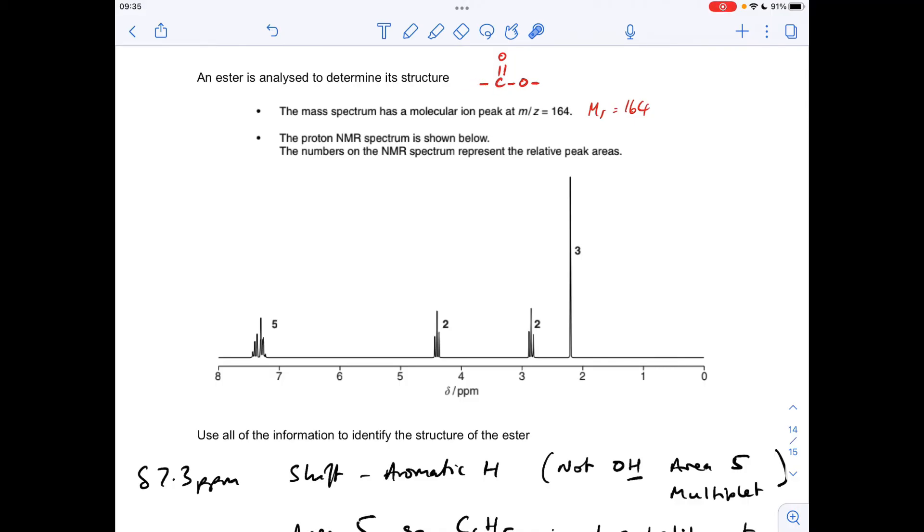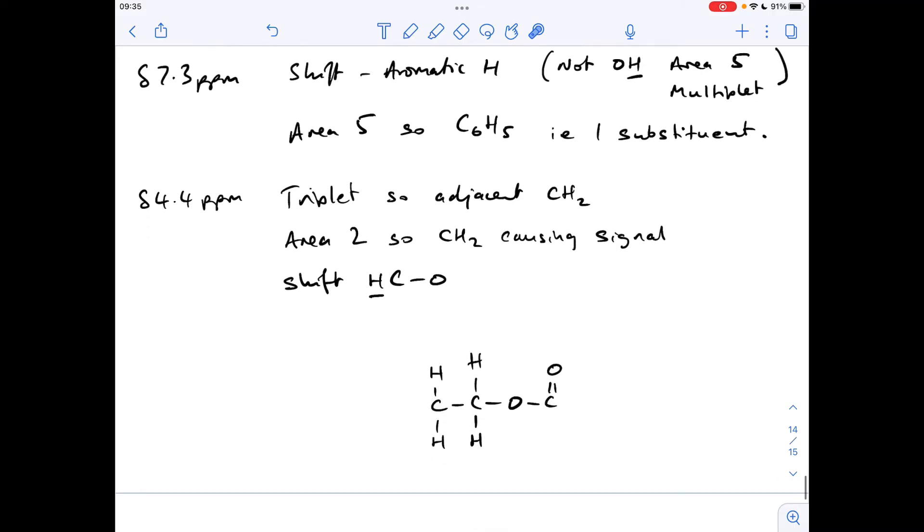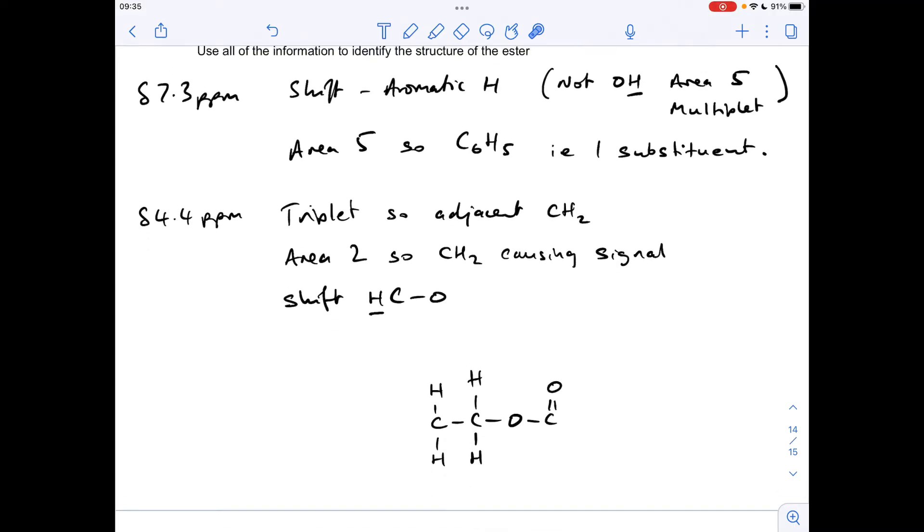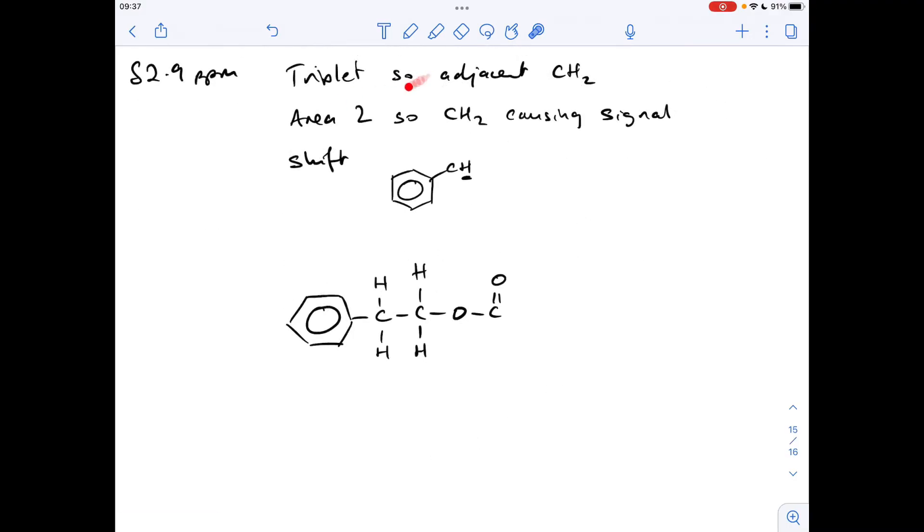Now, if we go to what we've already established, it's looking like this signal at 2.9 ppm is due to these protons here, because they would have an area of 2 and they would also be split into a triplet. So it's most likely that we've got a benzene ring on the left hand side there. So there's the analysis of that signal written up now, and that's what I'm saying in terms of structure.